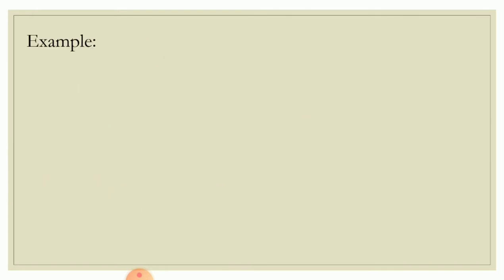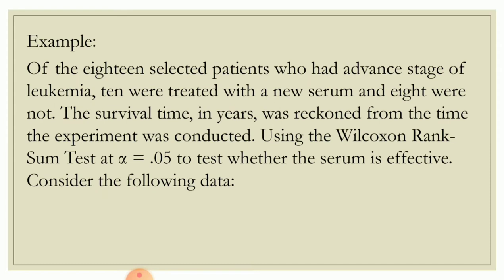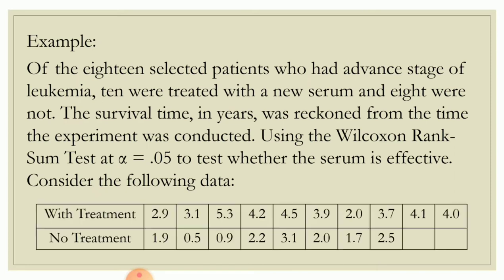For example, of the 18 selected patients who had an advanced stage of leukemia, 10 were treated with a new serum and 8 were not. The survival time in years was reckoned from the time the experiment was conducted. Using the Wilcoxon rank sum test at alpha equal to 0.05, we test whether the serum is effective. We have a table showing 10 patients with treatment and 8 patients with no treatment, along with their corresponding survival times in years.